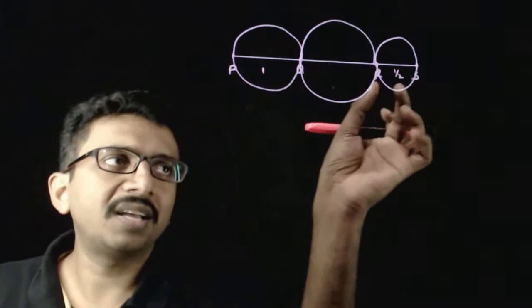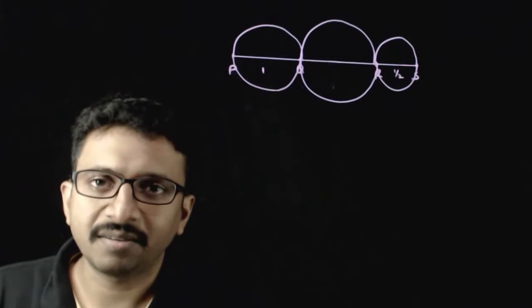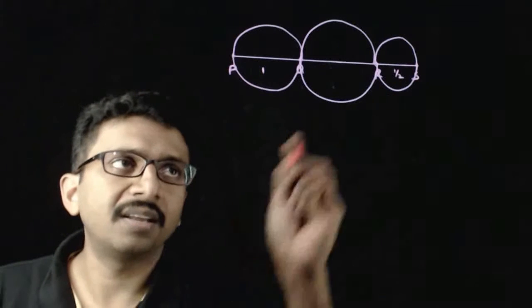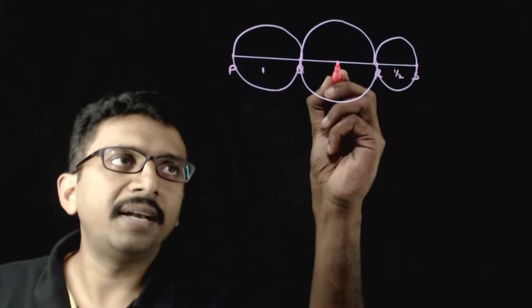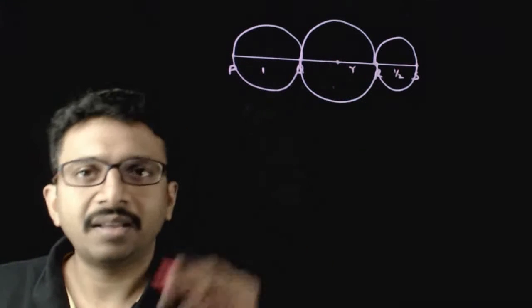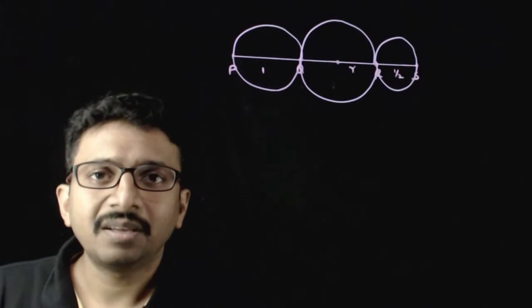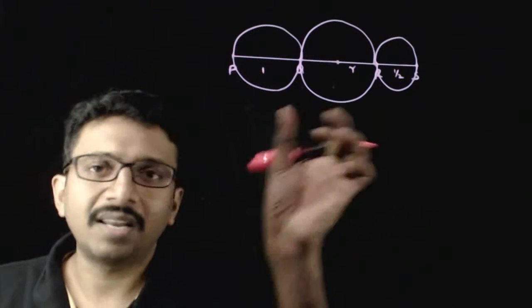1 will be the diameter of the first circle, half will be the radius of the first circle, and we define the radius of the centre circle as r.